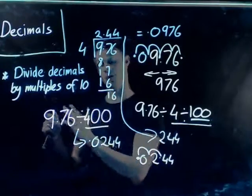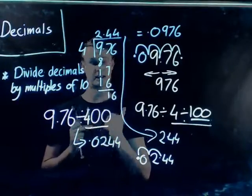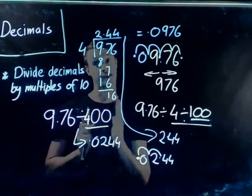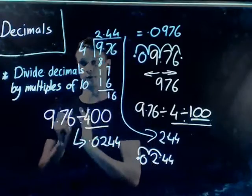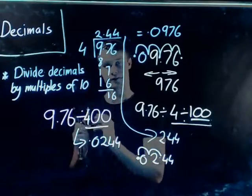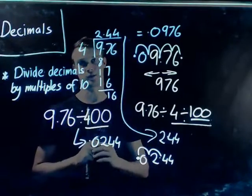So my answer is 0.0244. That's how you divide a decimal by a multiple of 10. Remember, it's easy when you just have a 10, 100, 1000, you move it that many zeros to the left. If it has a whole number in front of it, for example, 400, 500, break it into two separate parts, and then you can do it in two steps as you go through.